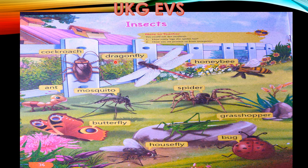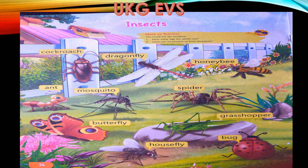Dragonfly — D R A G O N F L Y — dragonfly. It is a dragonfly, so it will have transparent wings. Honeybee — honeybee — H O N E...